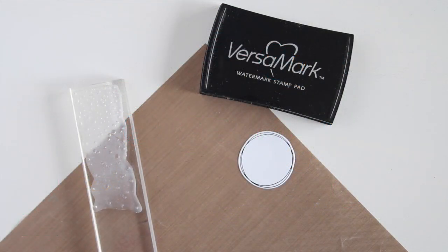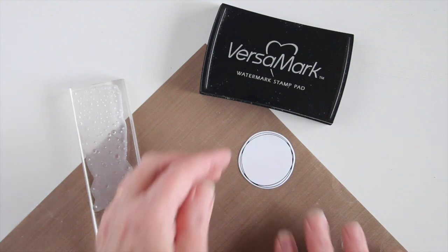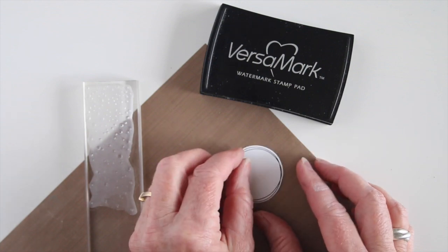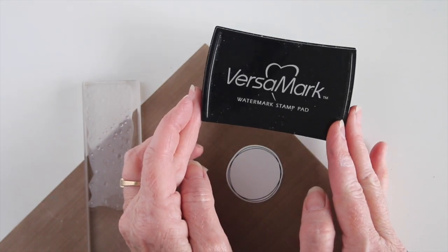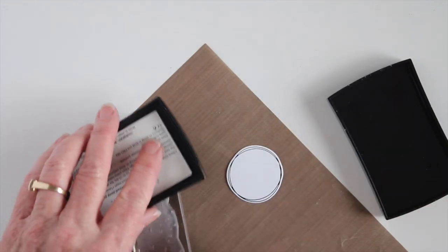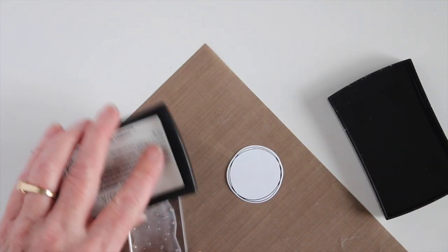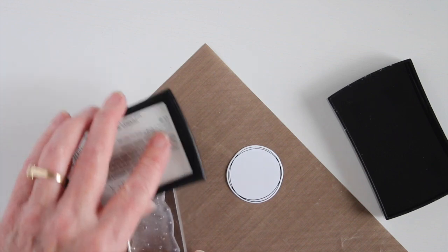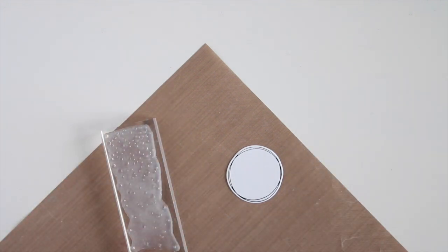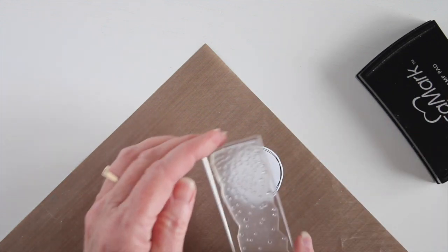The first resist technique that I ever learned was to use Versamark ink on glossy paper. So here I have the Ranger stamping paper because it's a coated type paper and my Versamark ink. It's really simple to do. You just ink up your stamp with the Versamark ink. I keep a refill bottle for my Versamark ink and I refill it occasionally. So what you want to make sure is that you have enough ink.